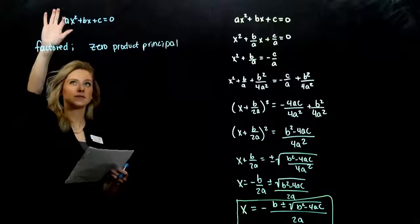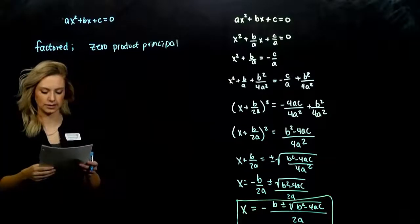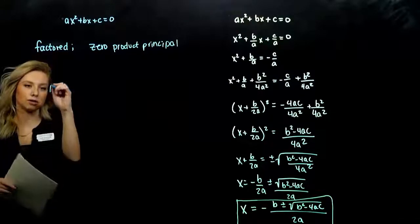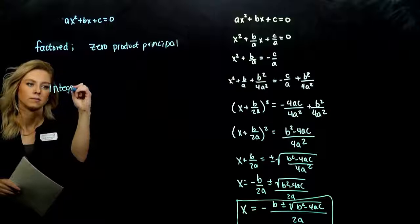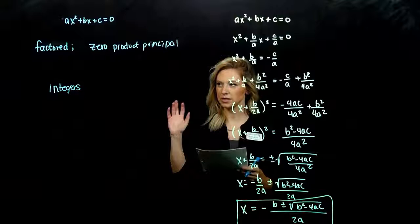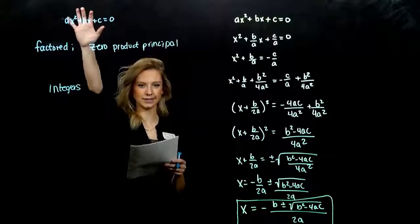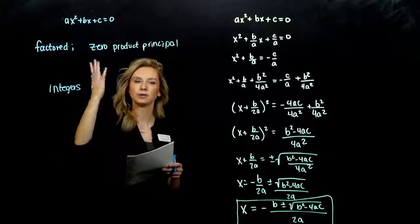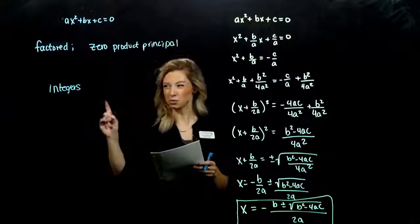But sometimes this thing is not going to factor that nicely using integers. So whole numbers, positive, negative, or zero. So we need another method. If I can't factor it, it's not going to help me solve for those values when it's quadratic. They don't turn out to be nice.